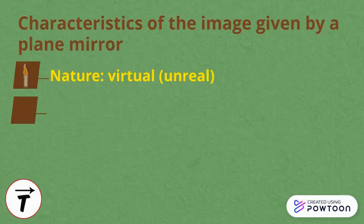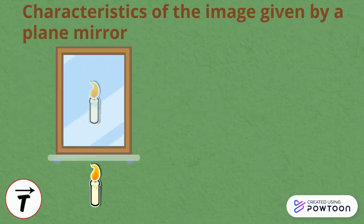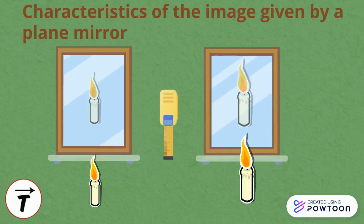Second, the size of the image equals that of the object. Notice that the image given by a plane mirror has the same size as that of the object.